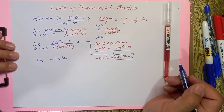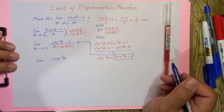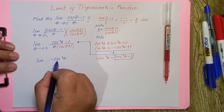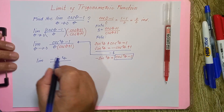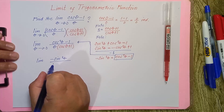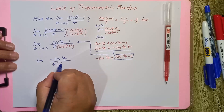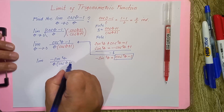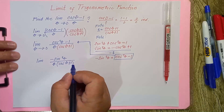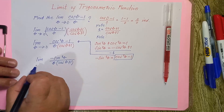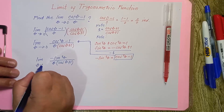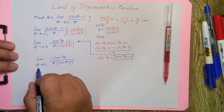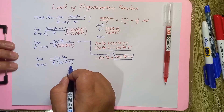By substitution, we now have the limit of negative sine squared theta over theta multiplied by (cosine theta plus 1), as theta approaches 0. Still, we cannot apply direct substitution here — further steps are needed.